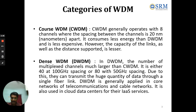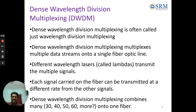DWDM is generally applied in core areas of telecommunications and cable networks, and is also helpful in cloud data centers for their IaaS services. This Dense Wavelength Division Multiplexing multiplexes multiple data streams onto a single fiber optic line. Different wavelength lasers transmit multiple signals, and each signal can be transmitted at a different rate. DWDM can combine 30, 40, 50, 60 or more signals onto one fiber — that is one big advantage.